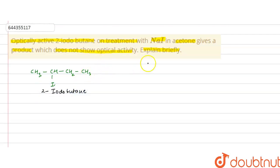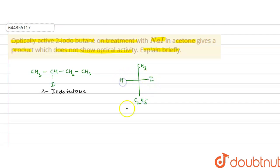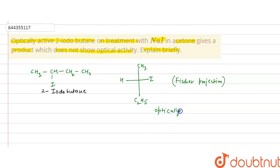It can be represented in a Fischer projection to show its optical activity. This is optically active because the carbon has four different groups attached, so this is a chiral center.